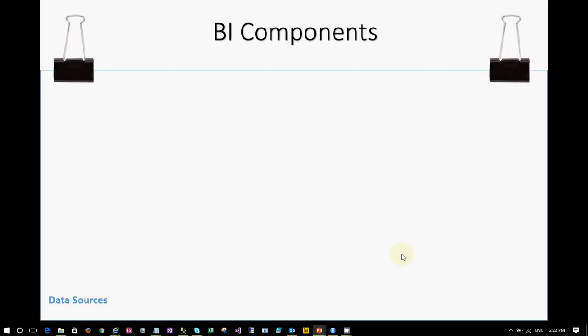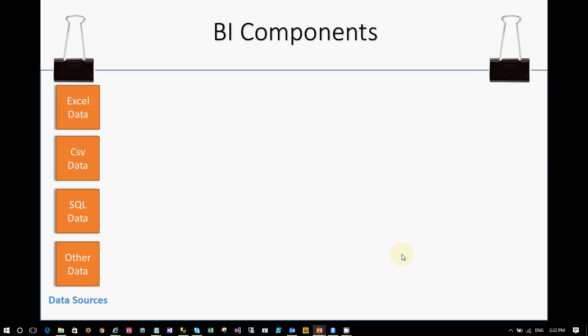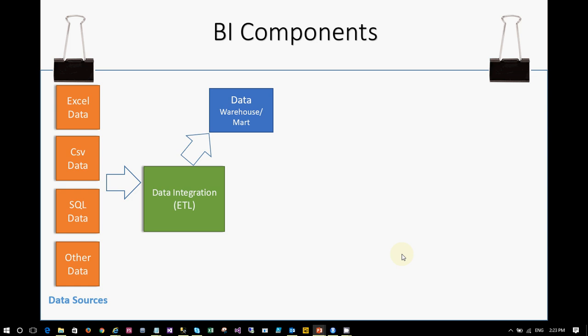The components of BI include data sources and ETL. Data sources means the various forms of data — whatever you have — and gathering that data. You transform the data using integration tools called Extract, Transform, and Load, and then load the data into a data warehouse where all the data is stored in the form of tables, a dimensional model, or flat structure. From the data warehouse, you can use analytical tools like cubes to do analysis, converting flat data into a dimensional model which makes analysis much faster.